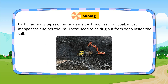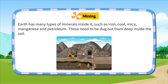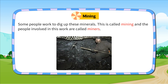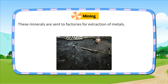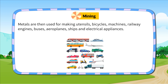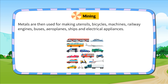Mining. Earth has many types of minerals inside it, such as iron, coal, mica, manganese and petroleum. These need to be dug out from deep inside the soil. Some people work to dig up these minerals. This is called mining and the people involved in this work are called miners. These minerals are sent to factories for extraction of metals. Metals are then used for making utensils, bicycles, machines, railway engines, buses, aeroplanes, ships and electrical appliances.